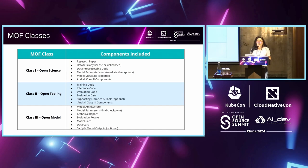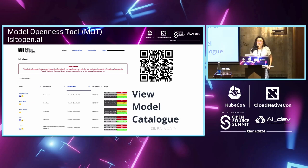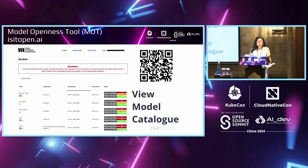Class two is Open Tooling, which includes training code, inference code, evaluation code, and so on. Class one — the purest — we call Open Science, meaning everything is open and using open qualified licenses. This is not perfect; we're still looking for feedback. We actually created a tool called MOT — Model Openness Tool — at isitopen.ai. It requests model producers to input their license information, and the tool spits out a badge, a classification of the model. It's an honor system, self-disclosed tool. It's a good attempt to show the openness of a model, and we'll be more and more precise as we move forward.